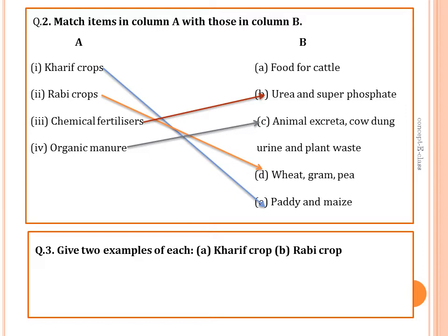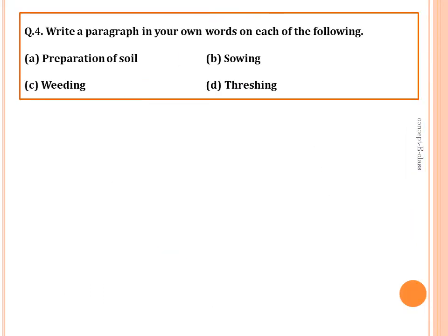Give two examples of each: examples of kharif crops are paddy and cotton; examples of rabi crops are wheat and mustard. The fourth question asks to write a paragraph on each of the following: preparation of soil, sowing, weeding, and threshing.